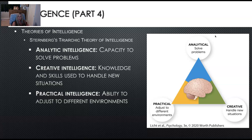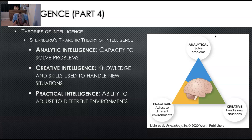Sternberg's triarchic theory of intelligence: your analytic intelligence covers problem-solving abilities; your creative intelligence is your knowledge and skills on how to adapt and handle different situations; and your practical intelligence is your ability to adjust to different environments. So if you have practical intelligence, maybe you can move from New York to Florida or wherever in between and you're very adaptable.